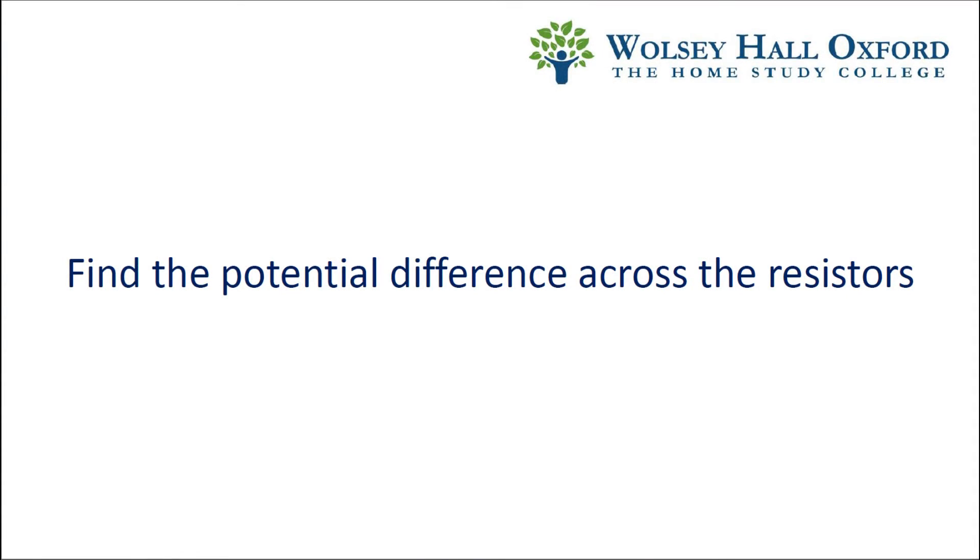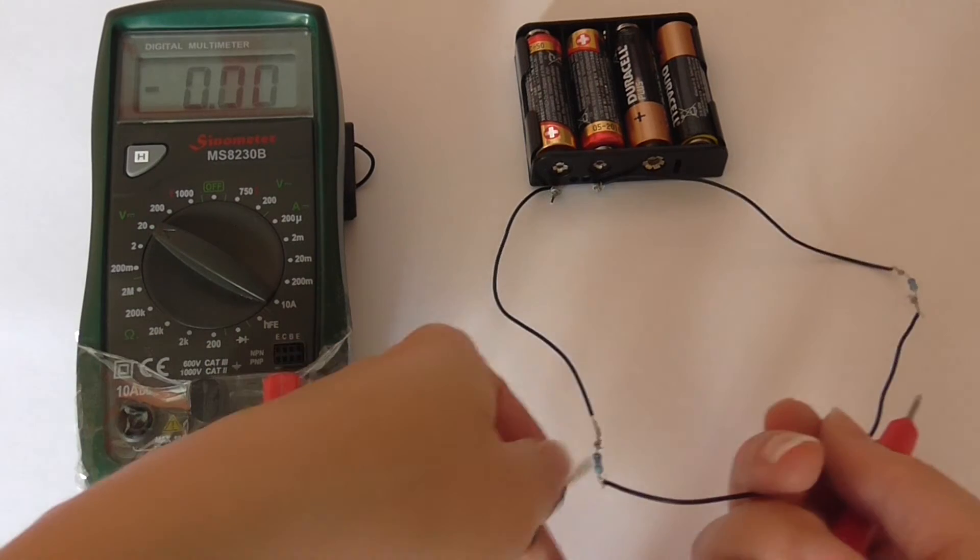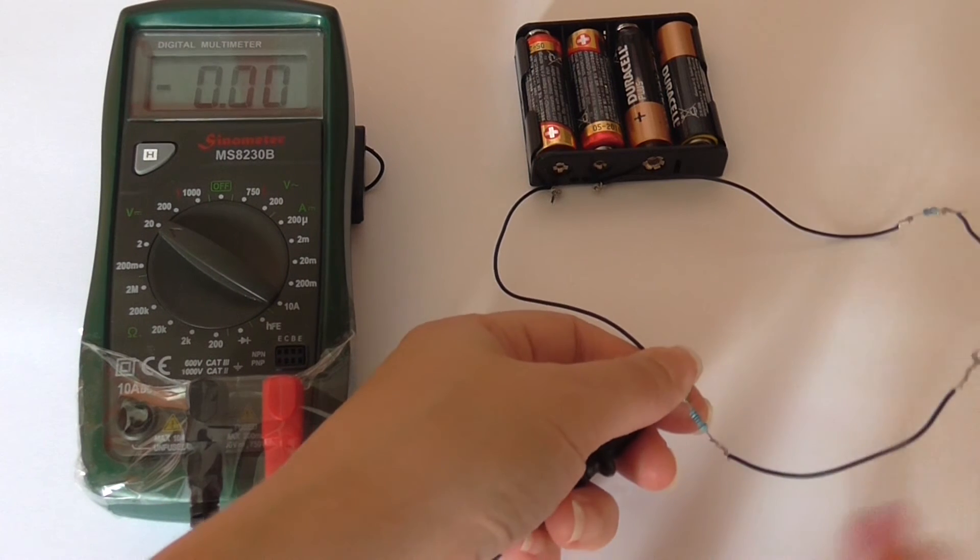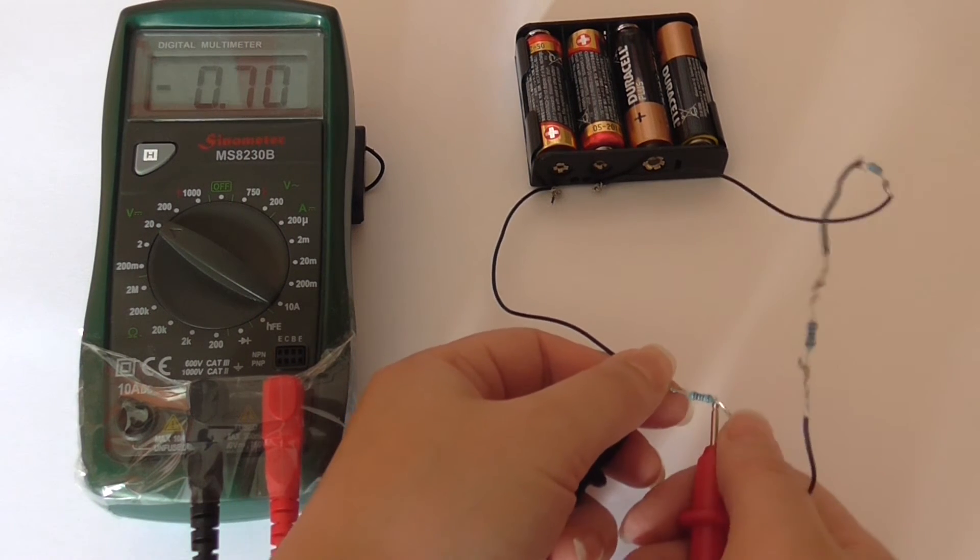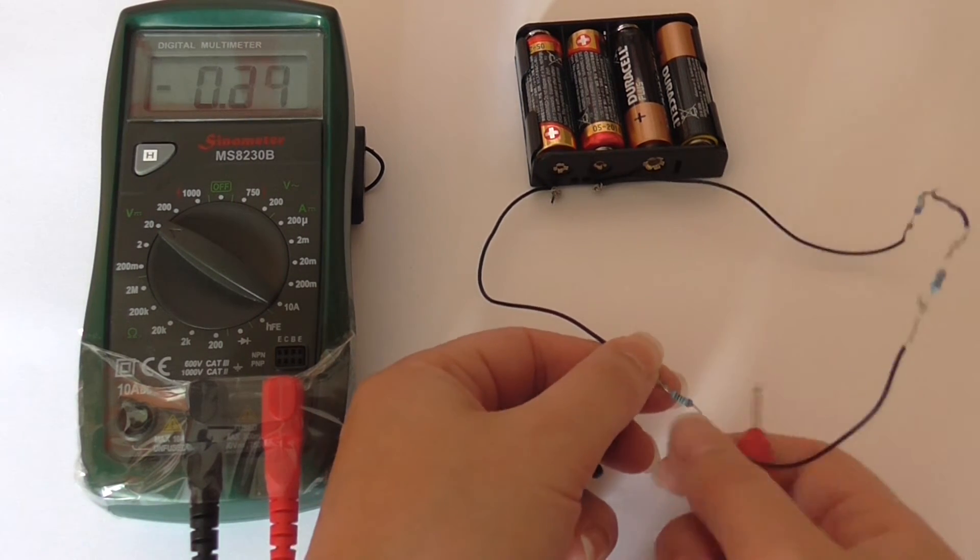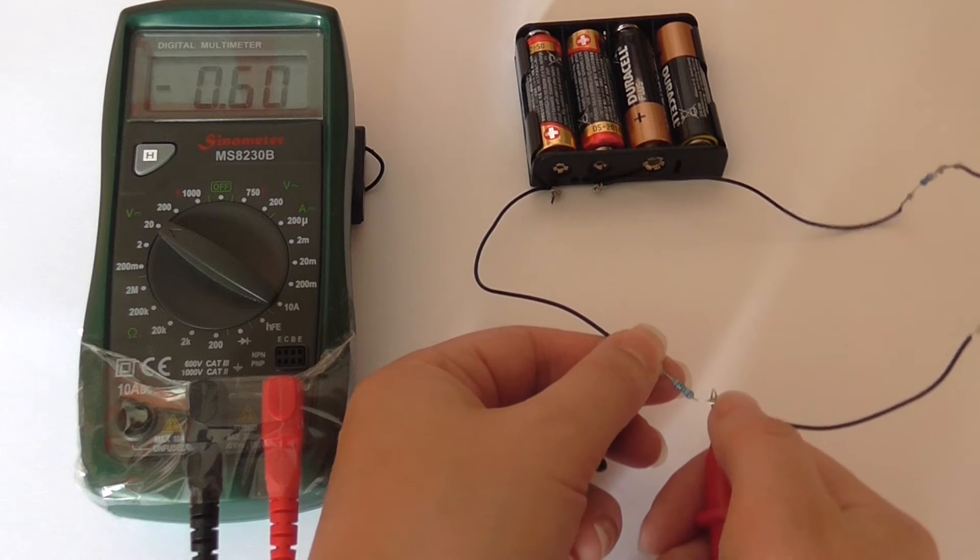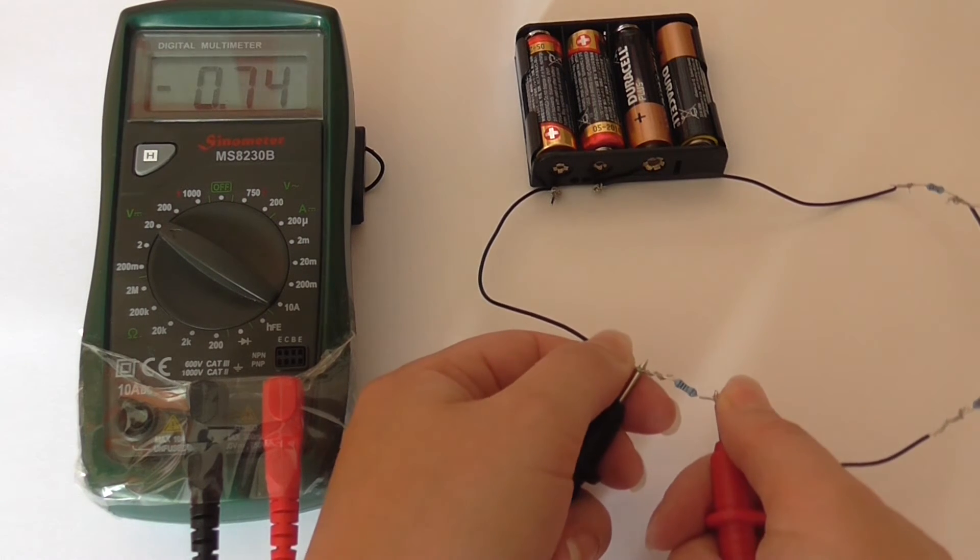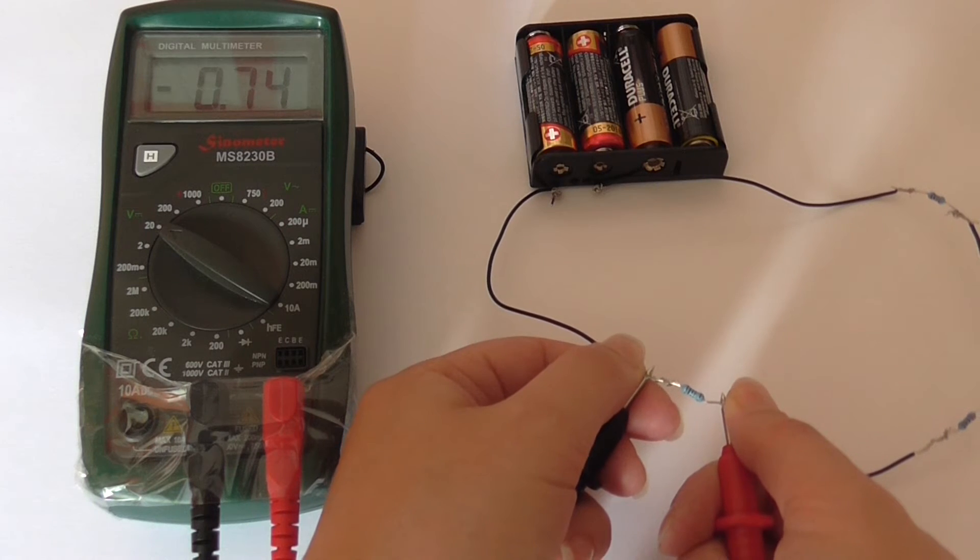Now for the potential difference across the resistors. 0.74 volts for the 1kohm resistor. Note that the minus sign is just because the black lead is on the positive end and the red lead is on the negative end. It's the magnitude we care about here.